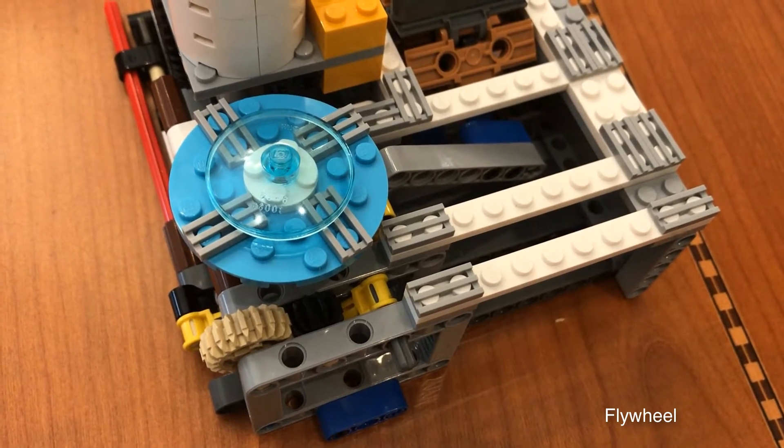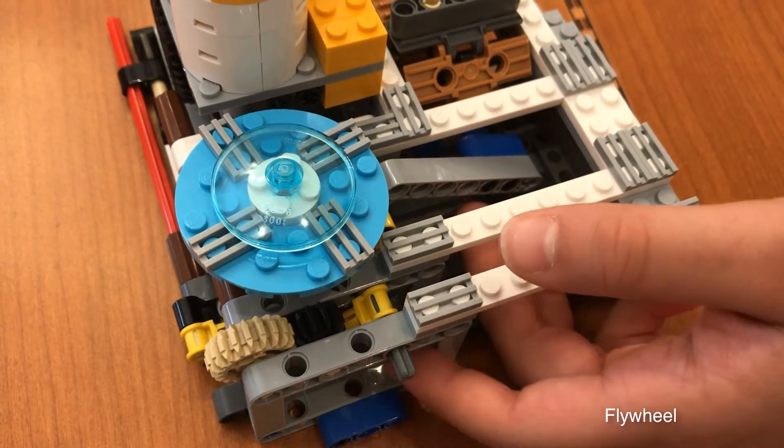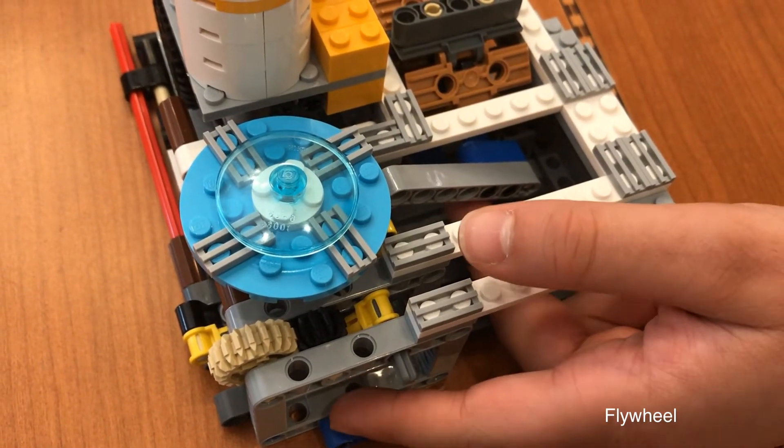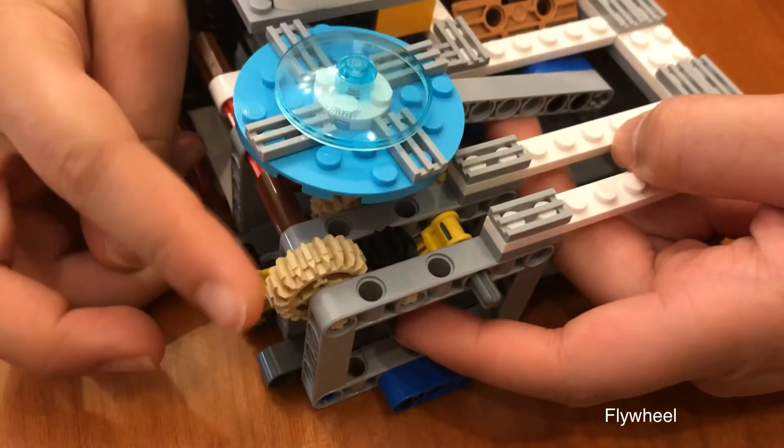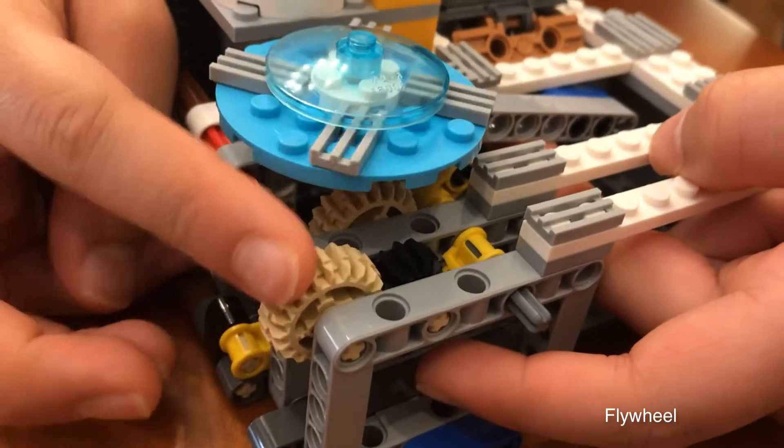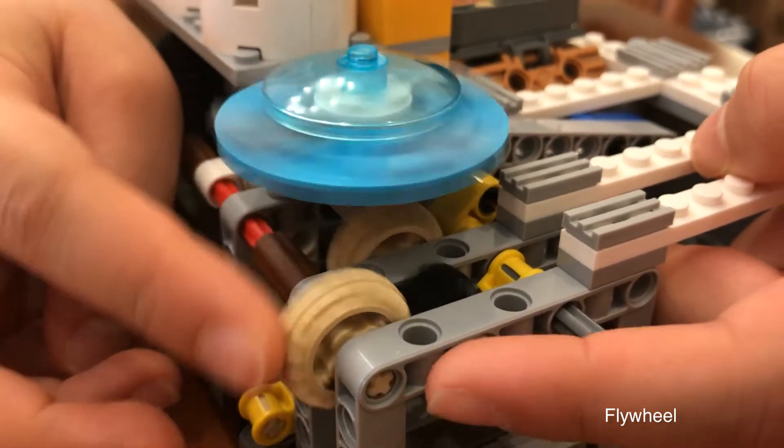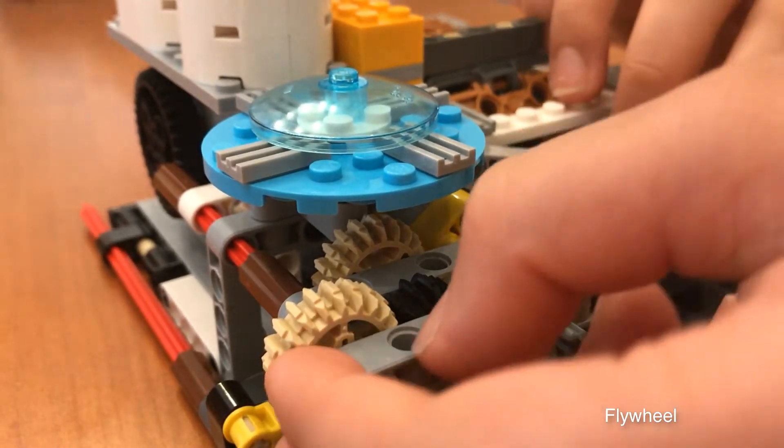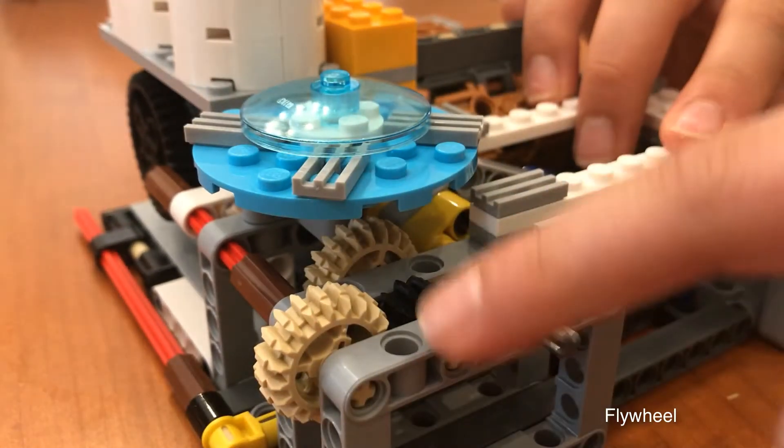Next, we are going to be taking a look at the flywheel. First, there is a grey angled lift arm underneath the mission model. Lift this up and then with your other hand, spin the flywheel. This is to make sure that the flywheel operates smoothly. If it doesn't, pull apart the 5x7 frames slightly to give more space for the gears.